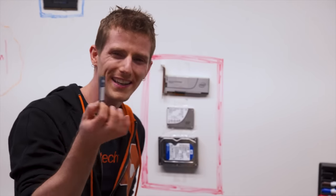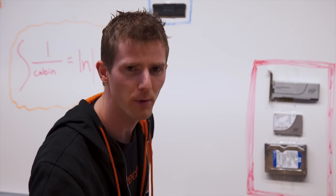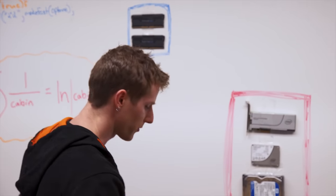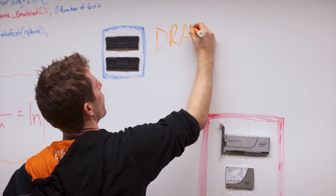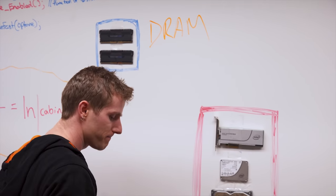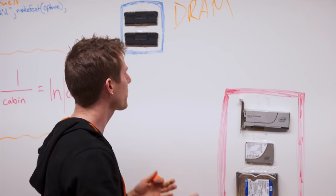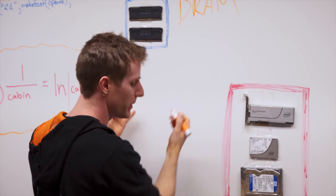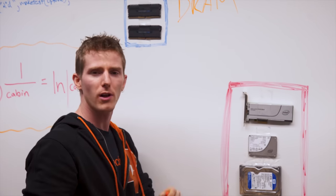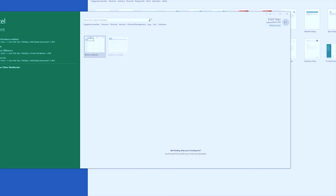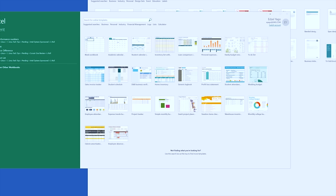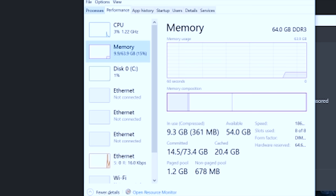So what is an Optane memory module? Here's the CliffsNotes. DRAM is the super fast storage that holds the data integral to whatever your system is doing at a given moment. So when you go to launch a web browser, a game, a simulation data set, or a video editing program — that is where everything gets kept so that the program runs smoothly.